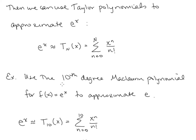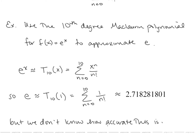For example, we can use the 10th degree Maclaurin polynomial for f of x equals e to the x to approximate e. Here we're looking for e to the first, so we want to use the 10th degree Taylor polynomial at x equals 1. So T₁₀ of 1 is equal to the sum n going from 0 to 10 of 1 over n factorial, which turns out to be approximately this decimal.